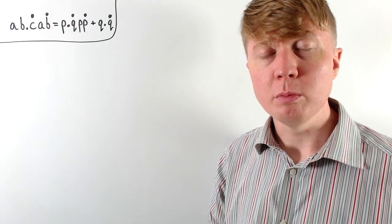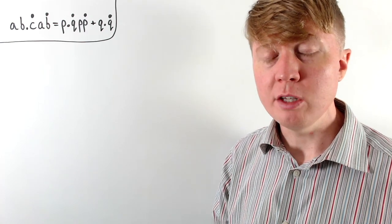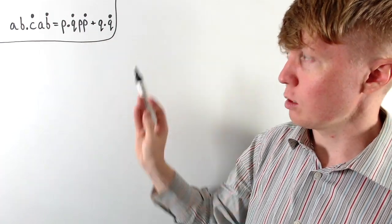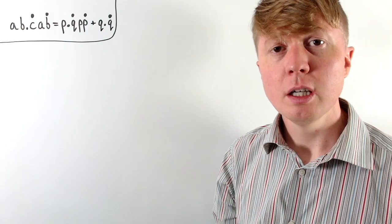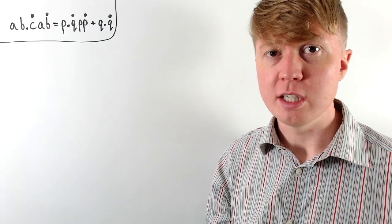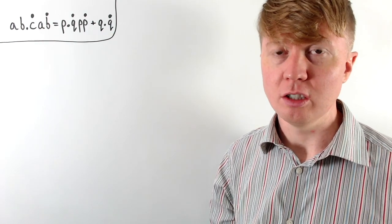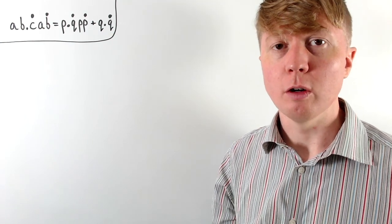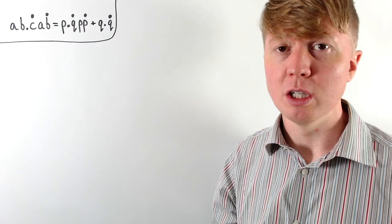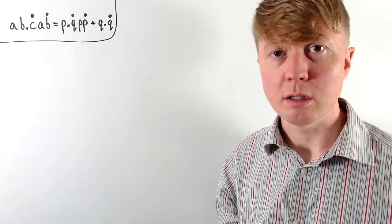We're going to solve this problem where we've got an equation with some numbers with recurring decimals, and we need to find the values of a, b, c, p, and q, where they're all going to be integers between 0 and 9 inclusive.